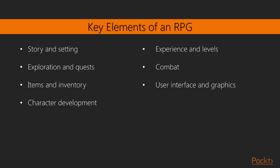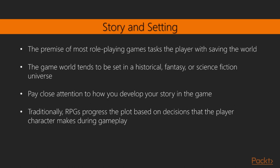Key elements of an RPG: Story and setting. The premise of most roleplaying games tasks the player with saving the world, or whichever level of society is threatened. There are often twists and turns as the story progresses, such as the surprise appearance of estranged relatives, or enemies who become friends, or vice versa. The game world tends to be set in a historical, fantasy, or science fiction universe, which allows players to do things they cannot do in real life.